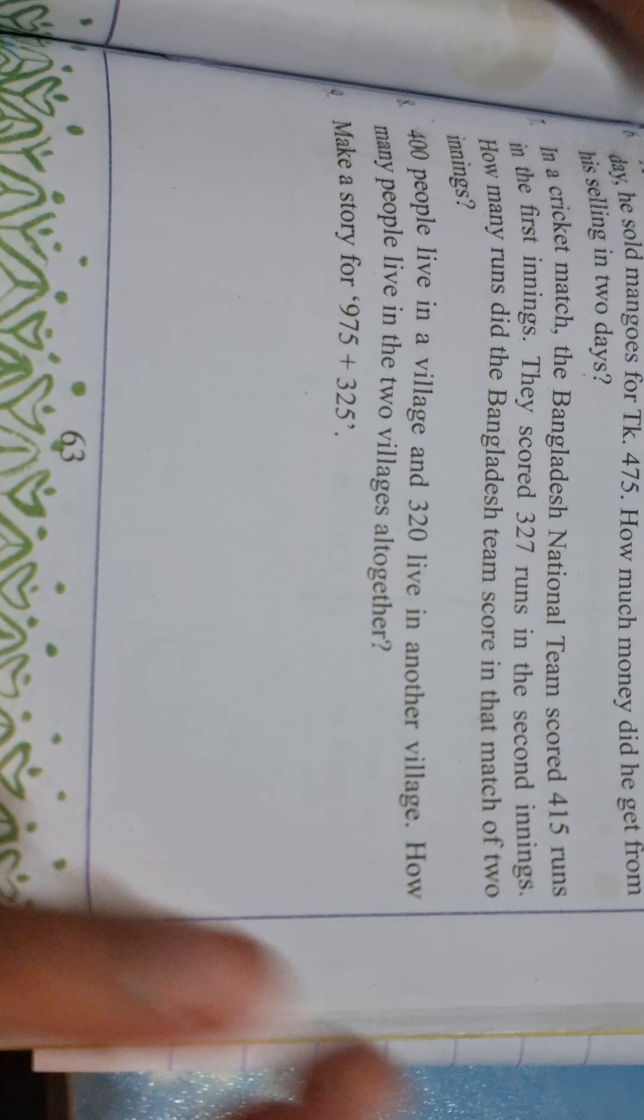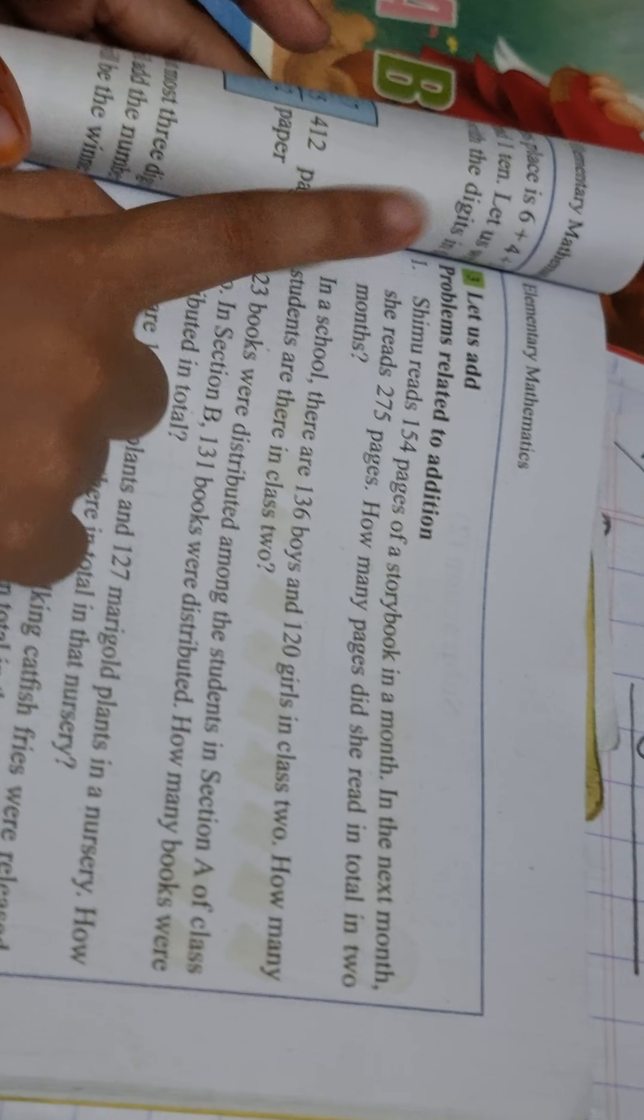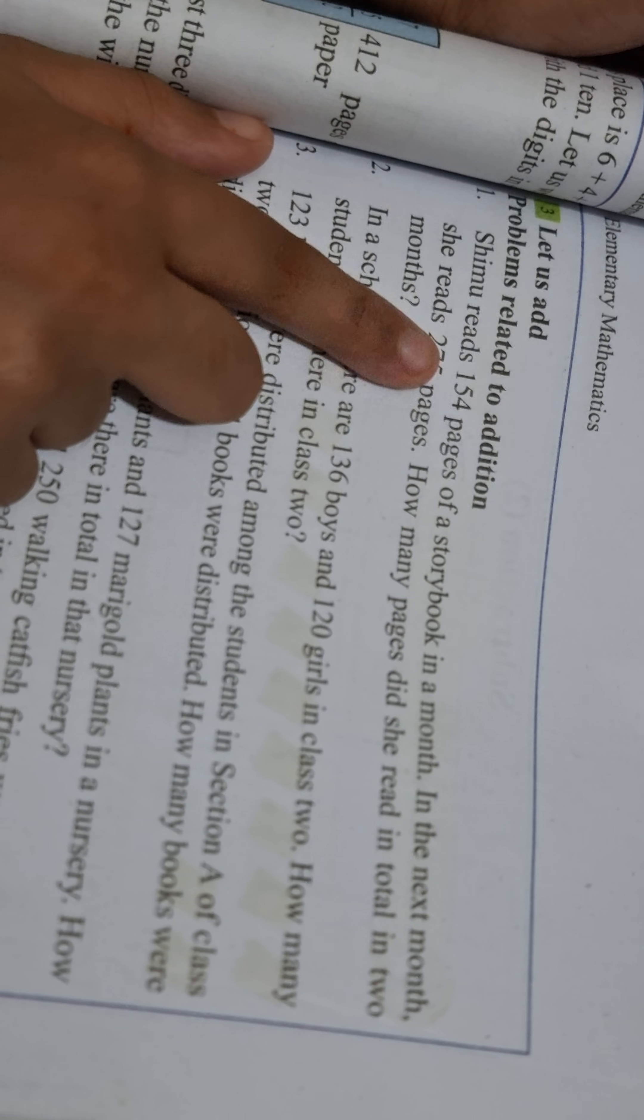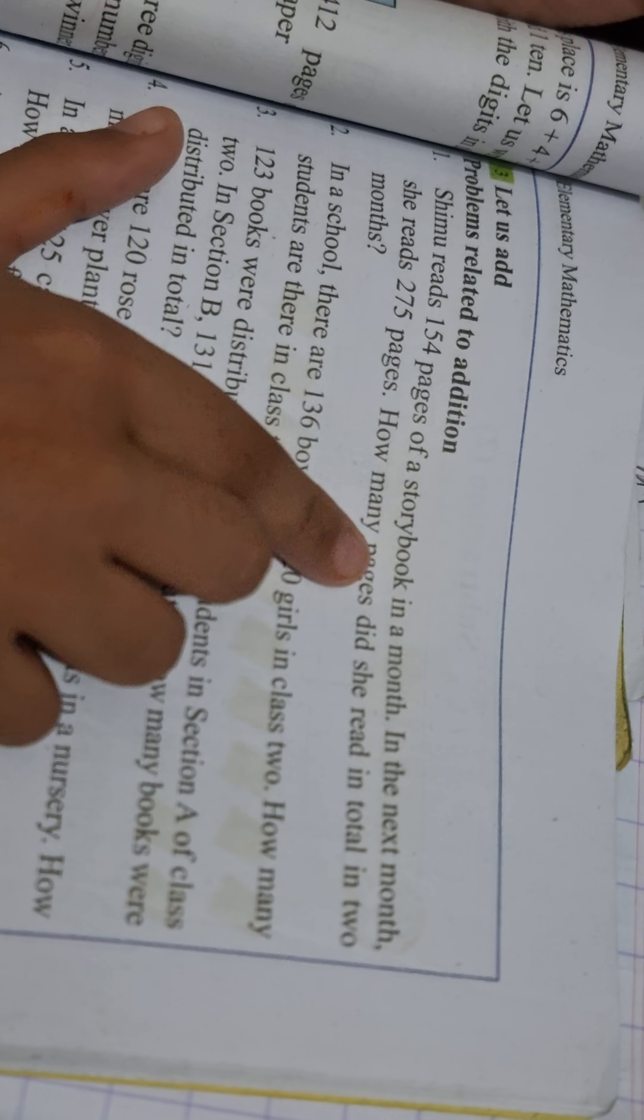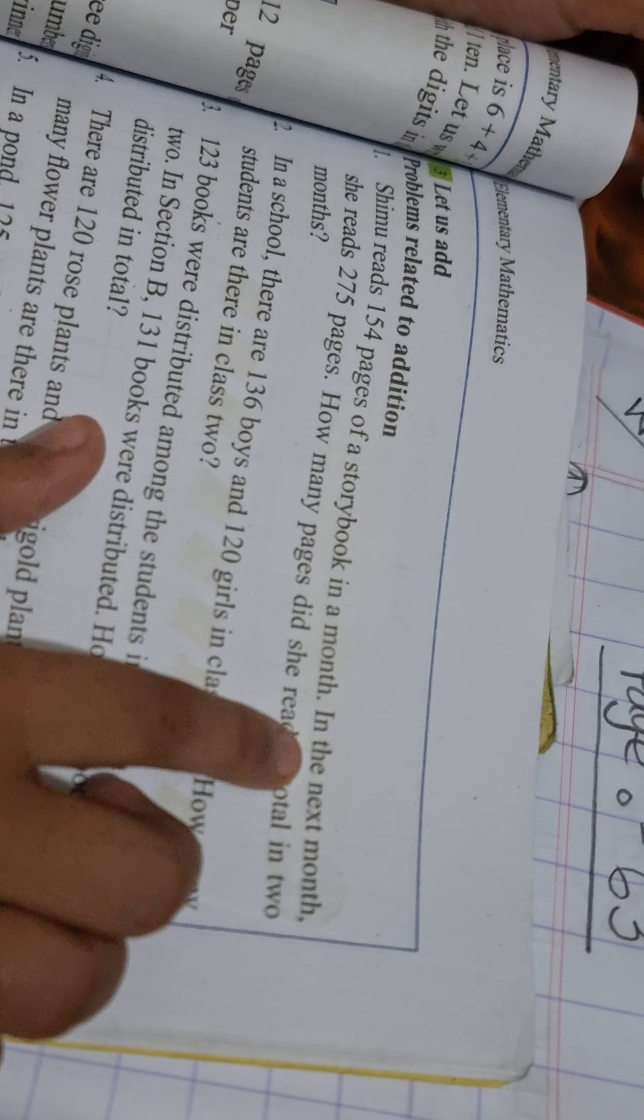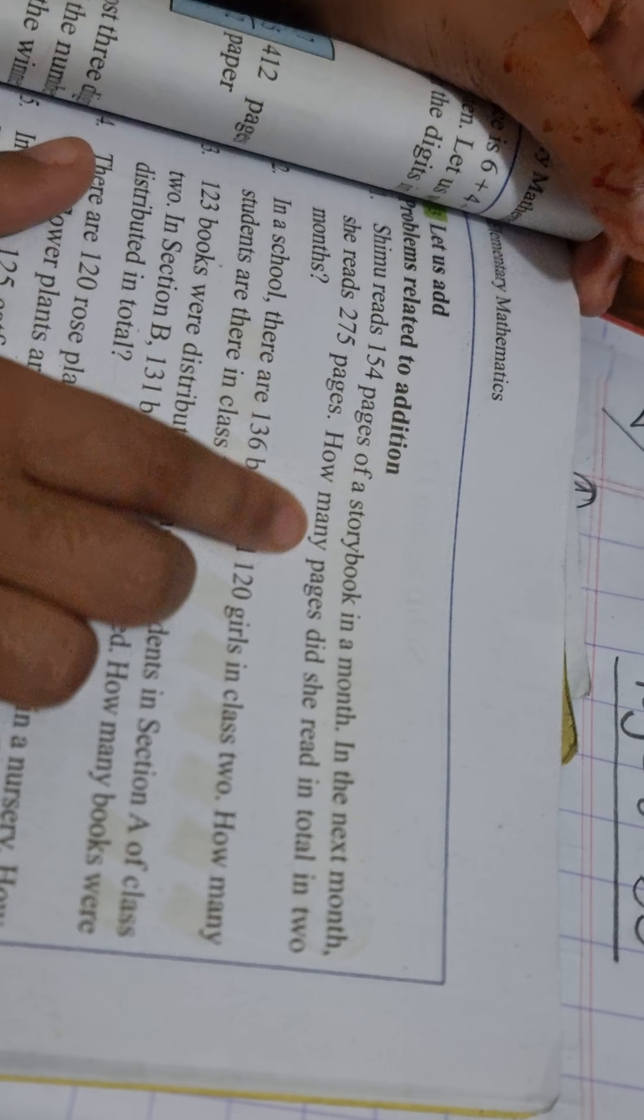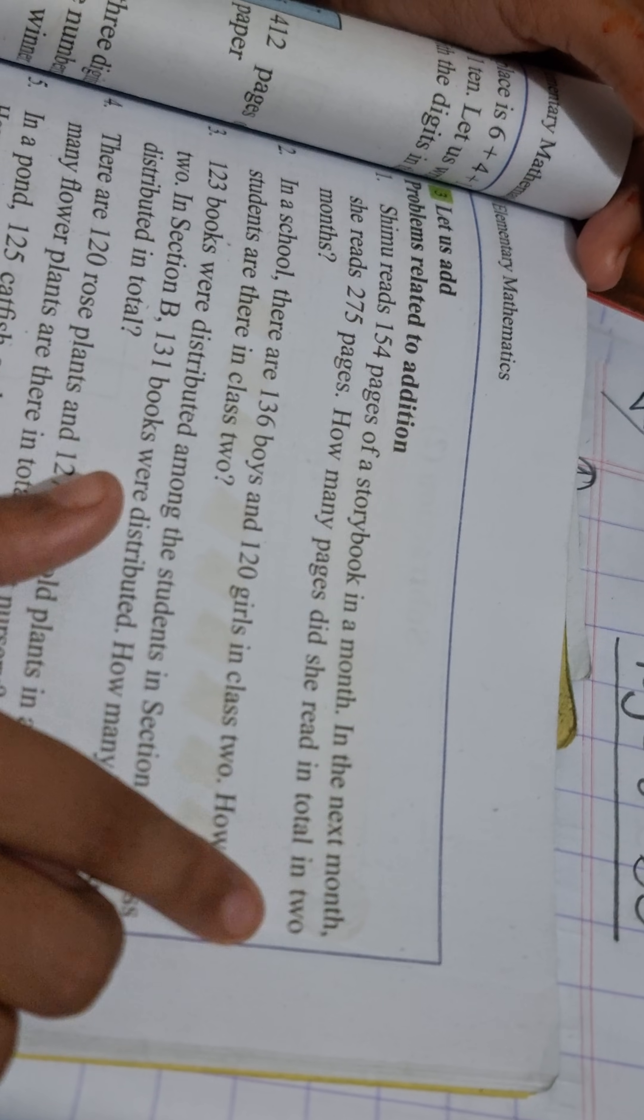Close to one problem, page 63. What problem number? One. Shumu reads, sorry, Shumu reads 154 pages of a storybook in a month. In the next month, she reads 275 pages. How many pages did she read in total in two months?